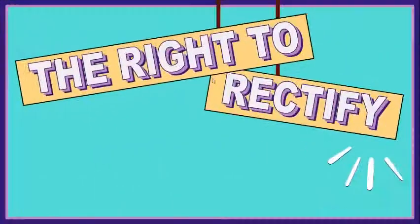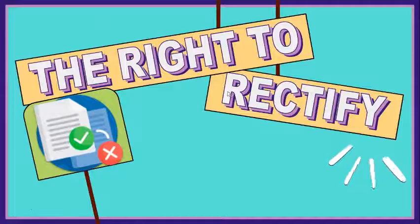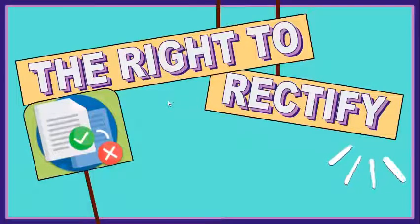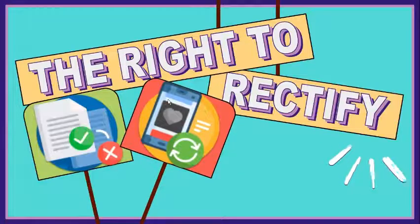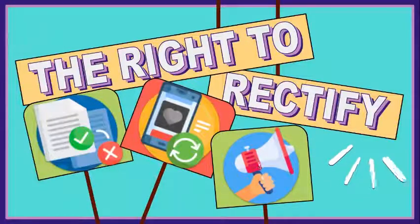Next is the right to rectify. This means you have the right to dispute any inaccuracy in the personal information processed, and to have the personal information controller correct it immediately. The personal information controller must ensure that the new and retracted information will be accessible, and that third parties who received the erroneous data will be informed upon your request.